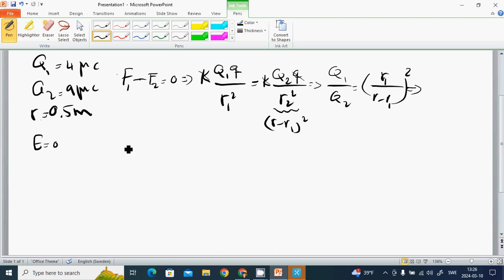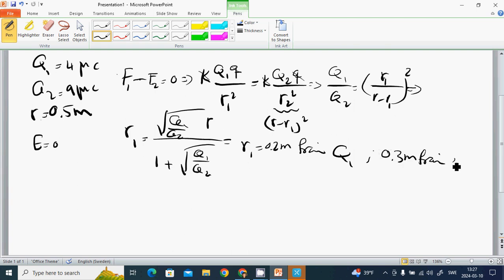We put in the values and find that r1 equals 0.2 meters from q1, and 0.3 meters from q2.